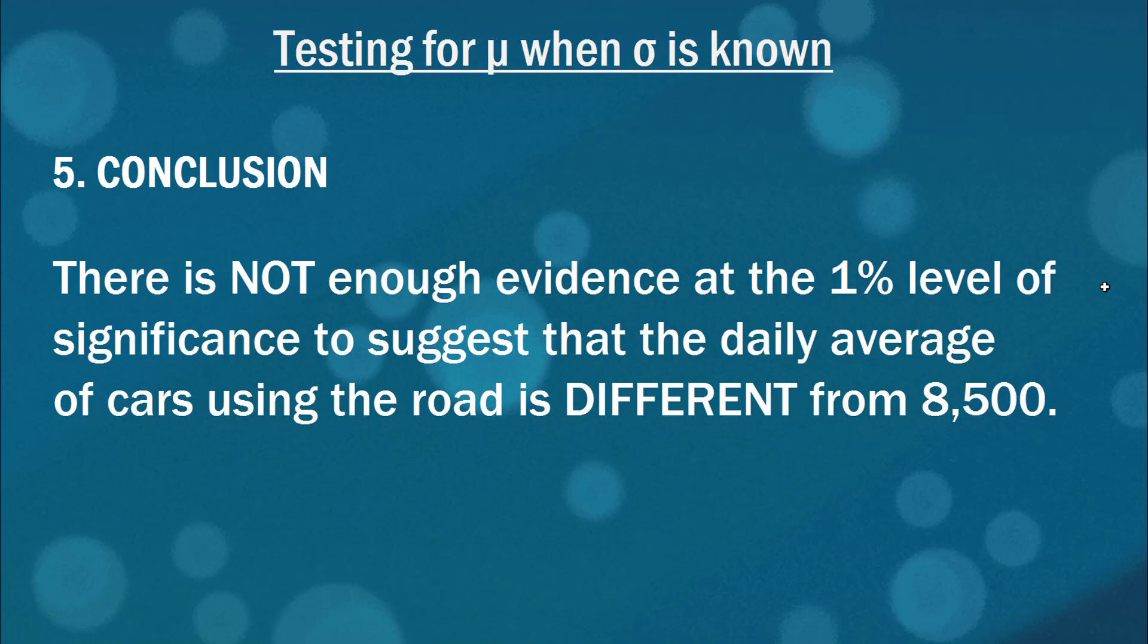And I guess that gives us some intuition as to why whatever we're seeking evidence for goes in our alternate hypothesis. Remember that from the beginning? We can never really conclude any evidence in favor of the null hypothesis. So whatever we're seeking evidence for, we put in the alternate hypothesis. But in this case, we couldn't reject that null hypothesis.